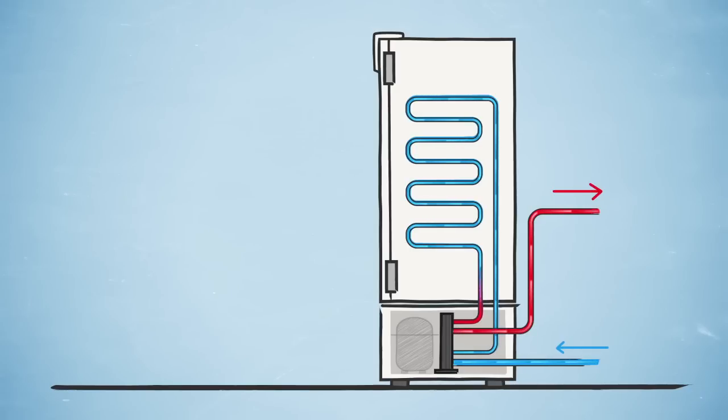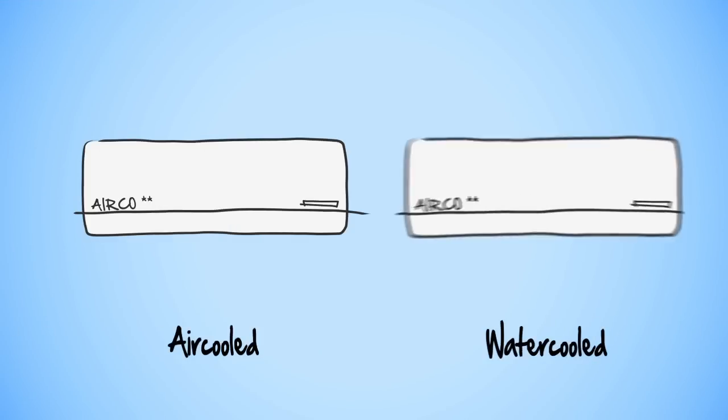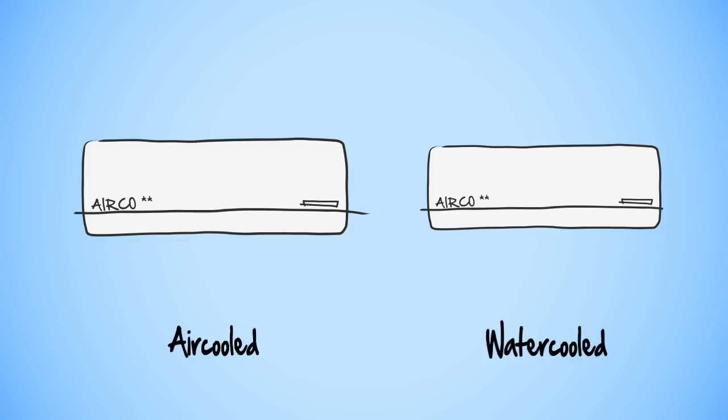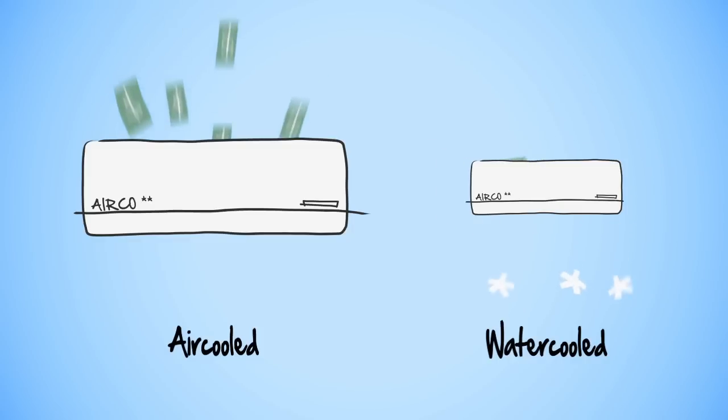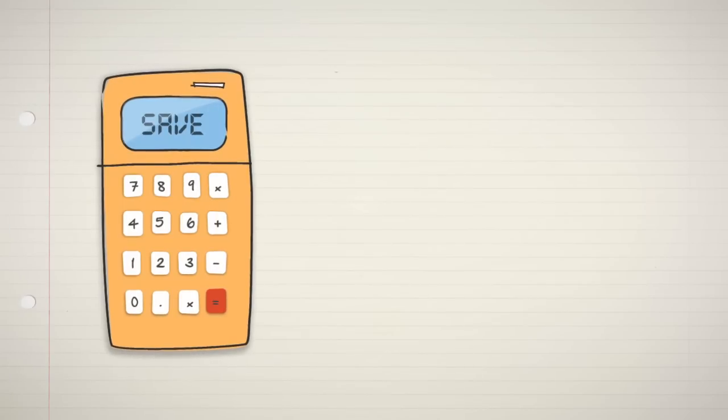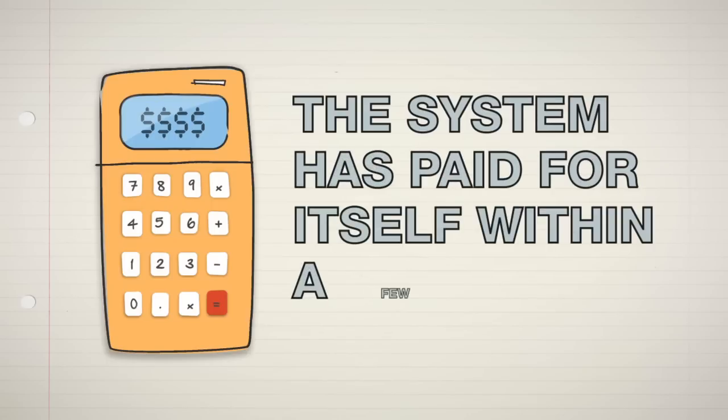The targeted removal of heat means that the air conditioner needed in the freezer room can be smaller. No, smaller. Even smaller! Less energy will be used because the air conditioning has to work less hard. This benefits the environment, but it is also a great advantage in financial terms, as the system will pay for itself within a few years.